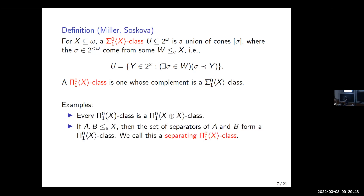Some examples: if you have a pi-0-1 class relative to X in the Turing sense, then it is a pi-0-1 class relative to X join X-complement in the enumeration sense. Another important example: if you have two sets A and B which are both E-reducible to X and are disjoint, then the set of all separators — sets containing A and disjoint from B — forms a pi-0-1 class relative to X in the enumeration sense. We call this a separating pi-0-1 class relative to X.